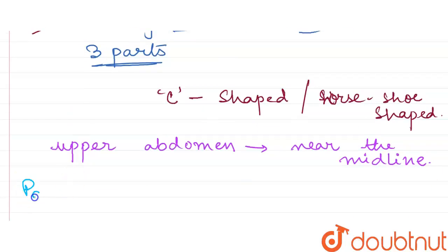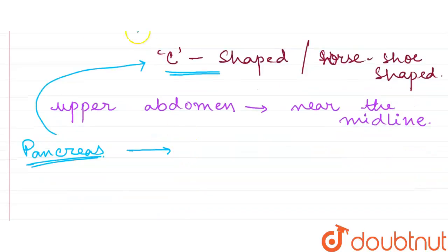Now pancreas. Pancreas is such an organ which lies between the limbs of the duodenum, that is the limbs of the C-shaped area. And this pancreas has two portions: one is exocrine portion, and one is endocrine portion.